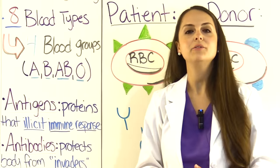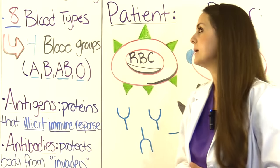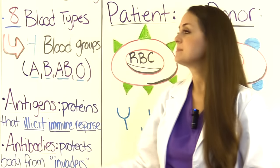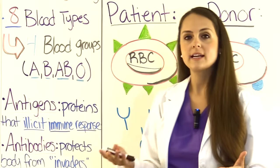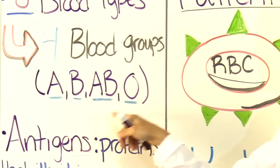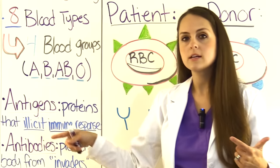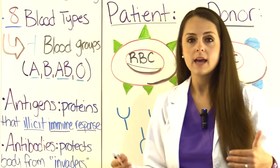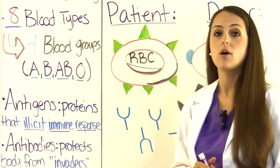Everyone has a unique blood type when we're talking about ABO blood typing. There are eight different blood types and they come from the four blood groups — A, B, AB, or O. The eight types come from the RH factor, so you can be A positive or A negative, B positive, B negative, and so forth.